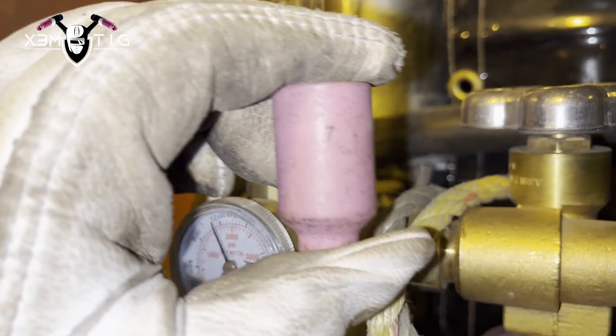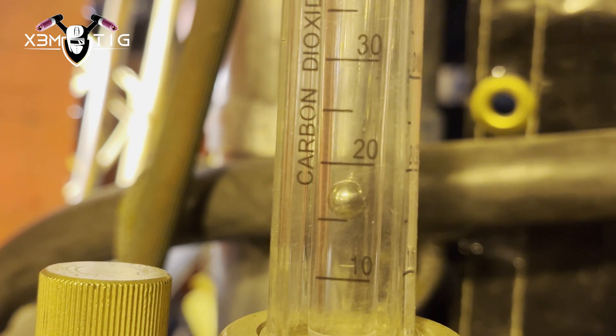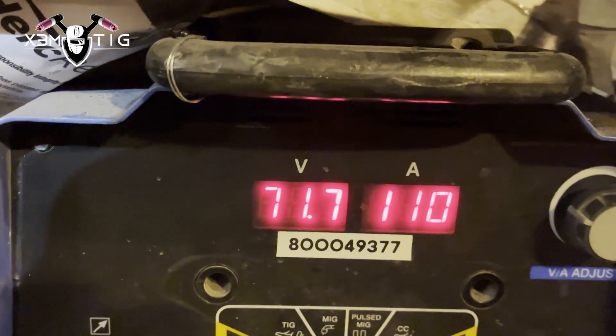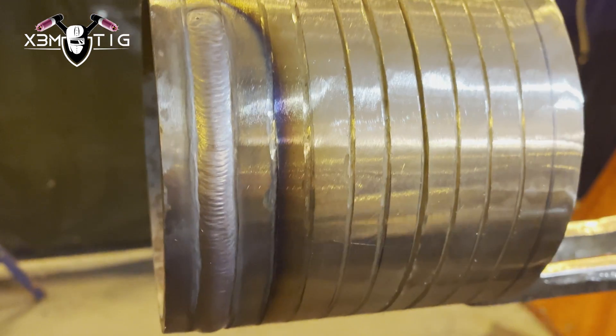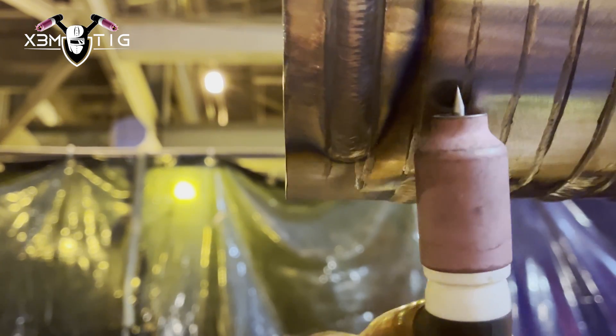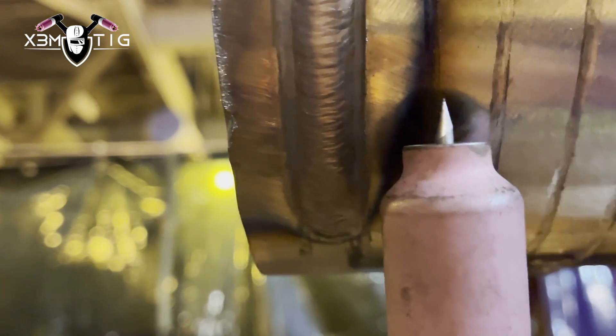Cup size 7: slightly larger diameter. The gas flow is from 10 to 15 or 15 to 20, and 110 amps for this one. Same thing, this is 3/32 filler wire.